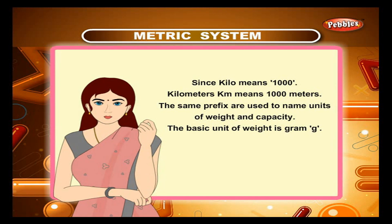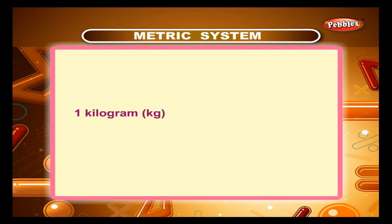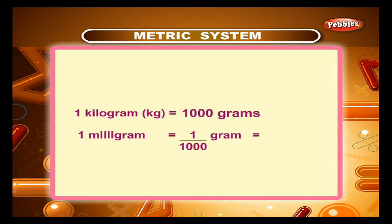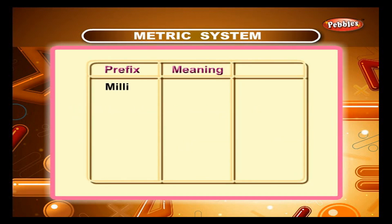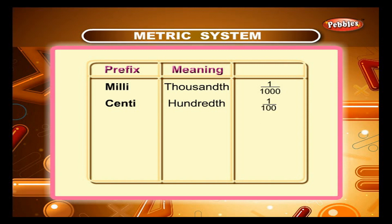Similarly for weights: 1 kilogram (kg) equals 1000 grams; 1 milligram equals 1/1000 gram, which is 0.001 gram. Prefix 'milli' means one-thousandth (1/1000); prefix 'centi' means one-hundredth (1/100); prefix 'deci' means one-tenth (1/10).